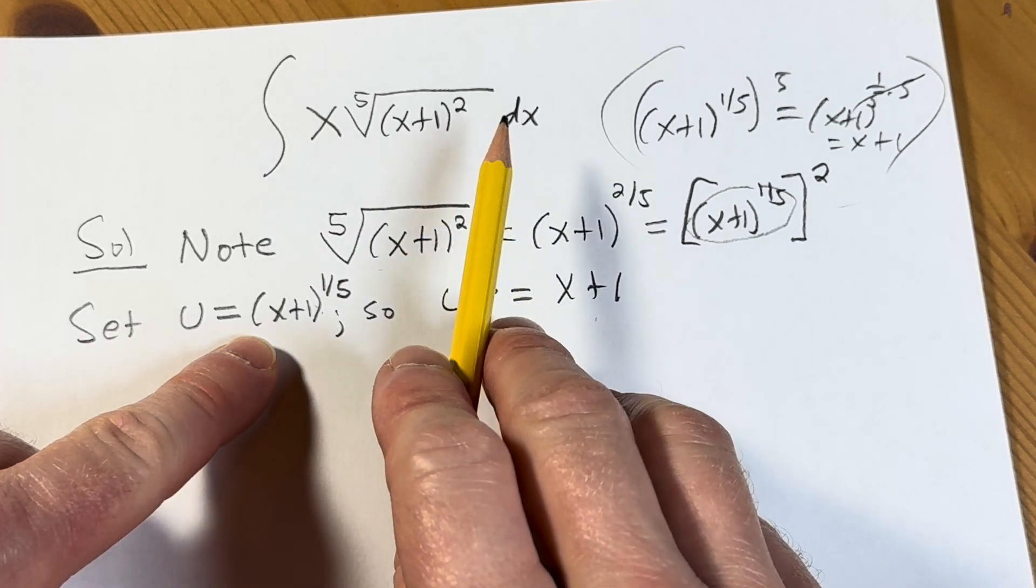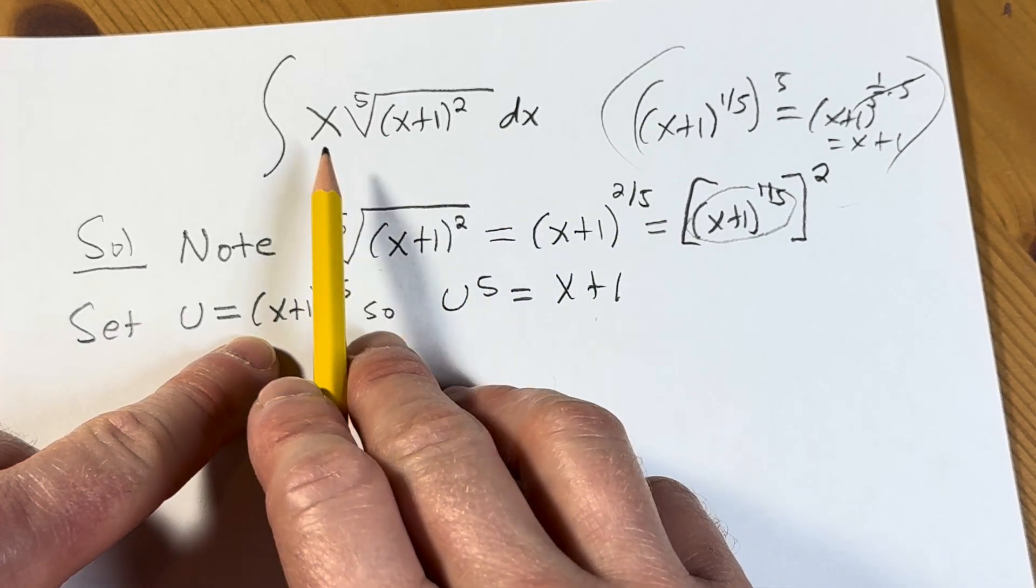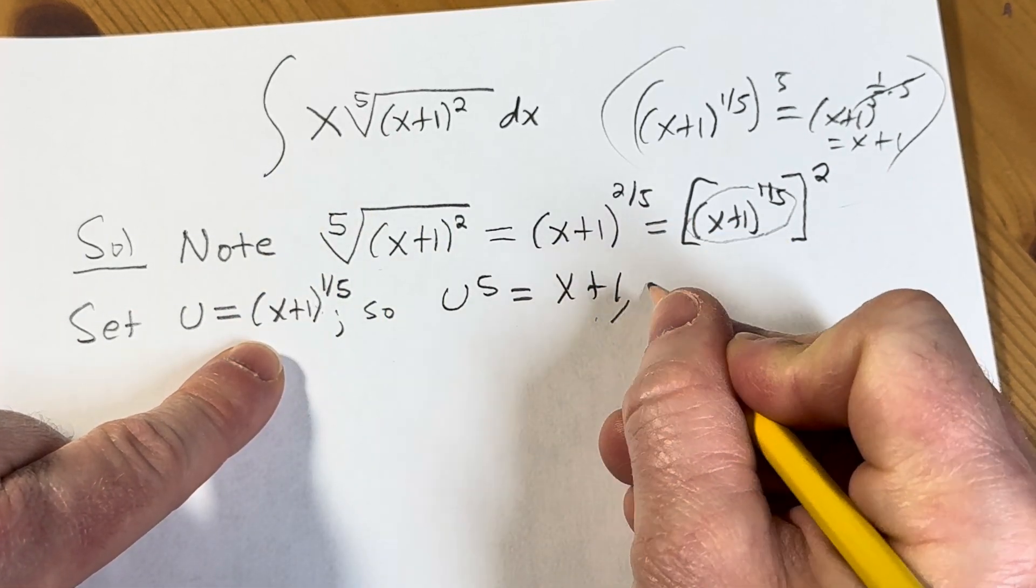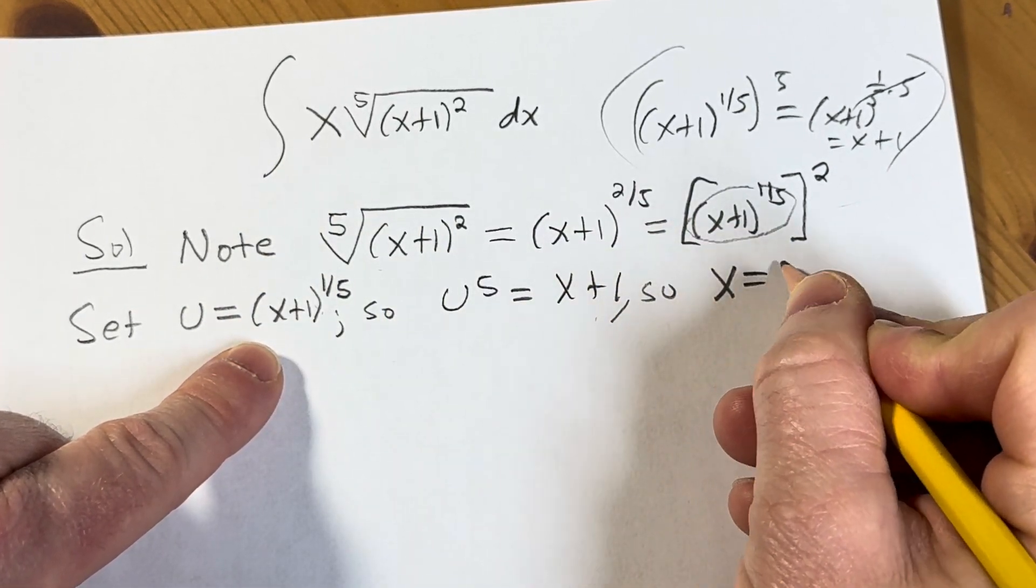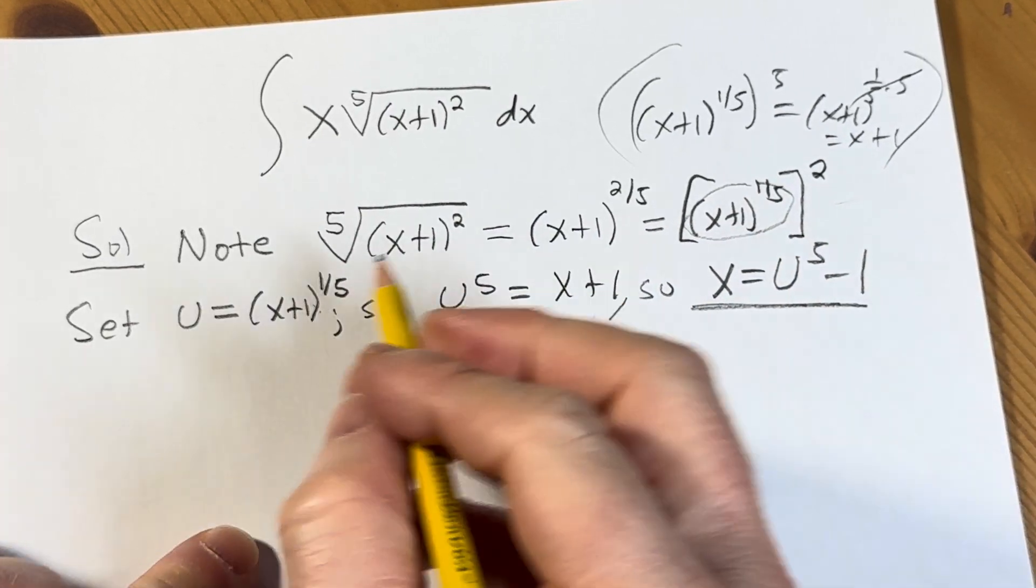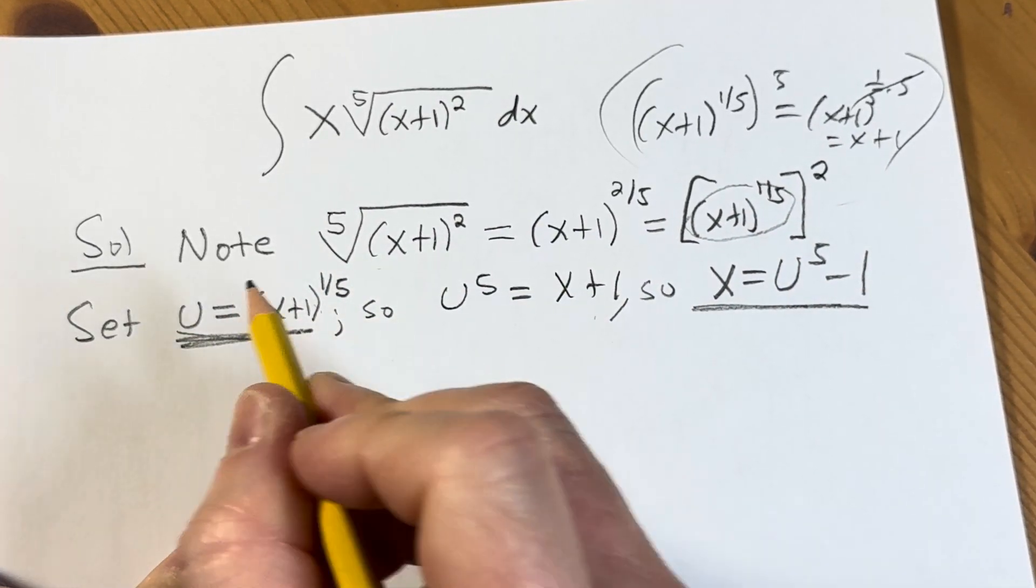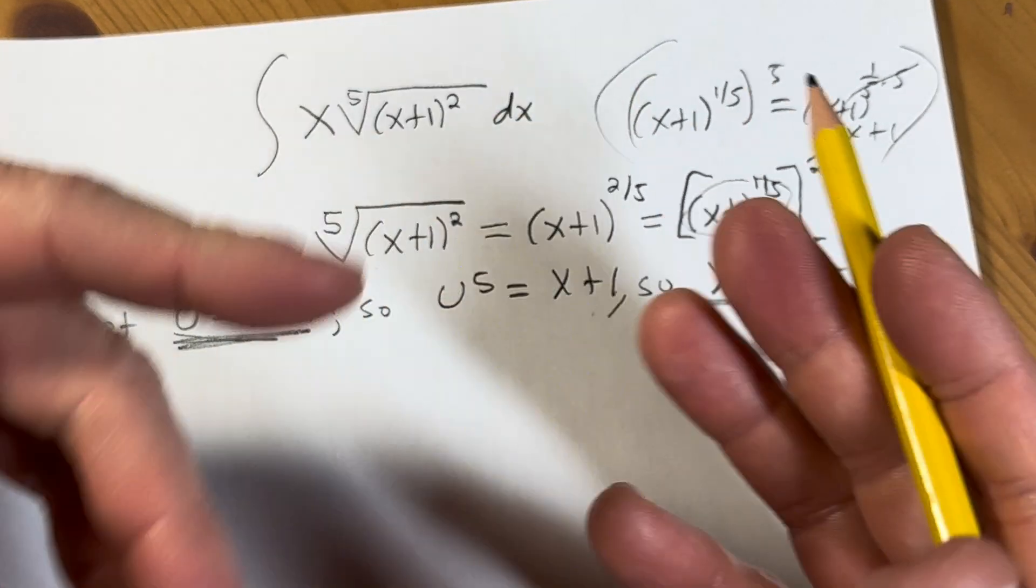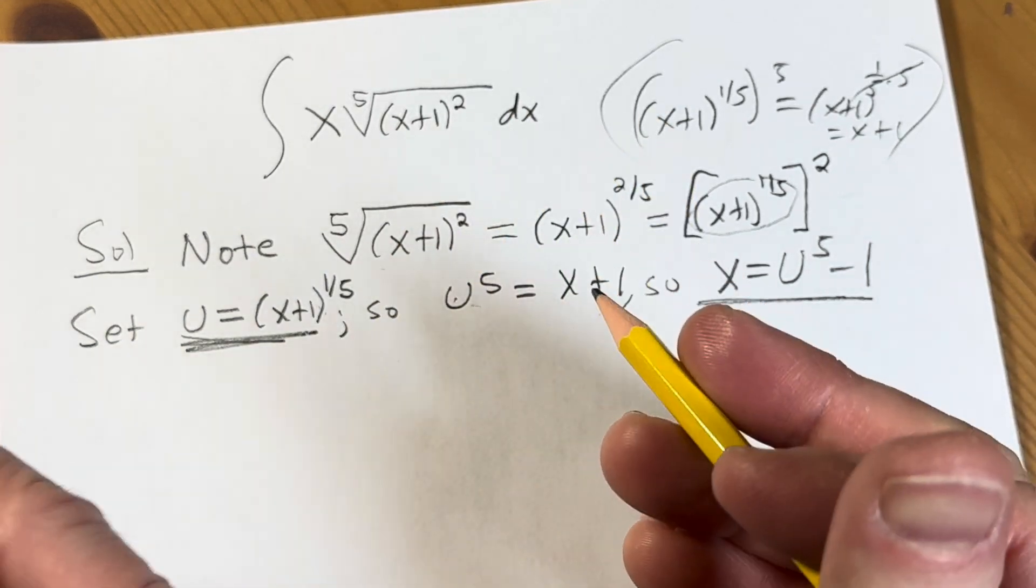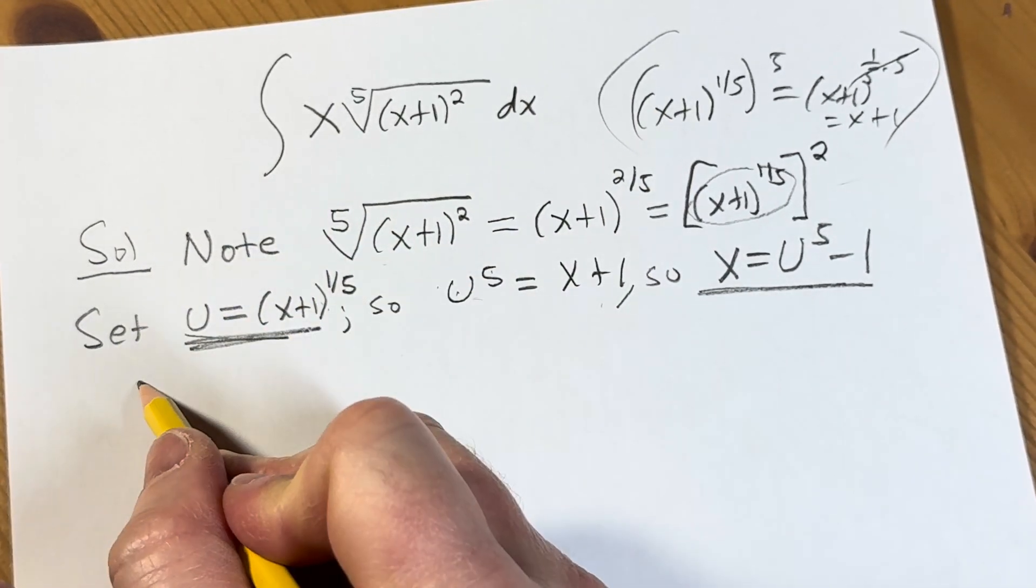And we need a couple more things. We need dx, and we also need x. So to get x, we can solve this. x is equal to u to the 5th minus 1. I'm going to underline that. That's important. And then we just need to differentiate this. Applying the power rule and differentiating both sides using what's called differential notation. Bring down the 5.